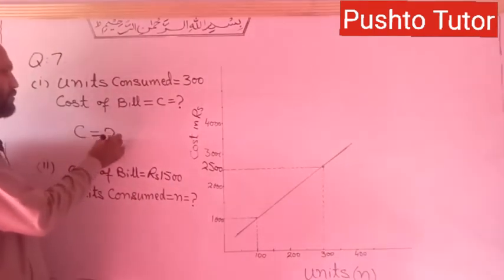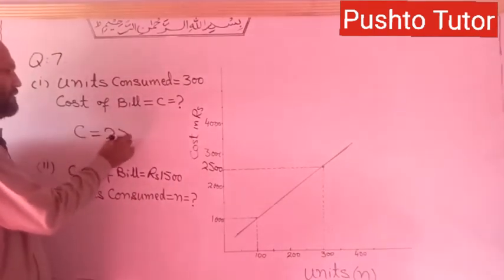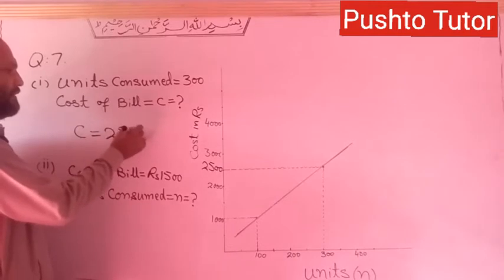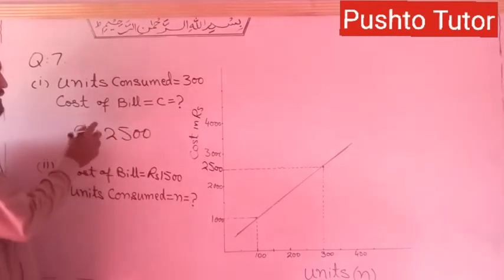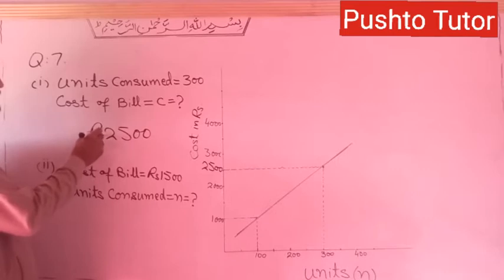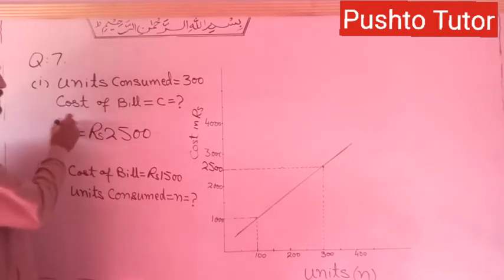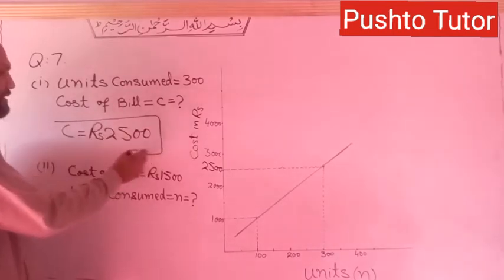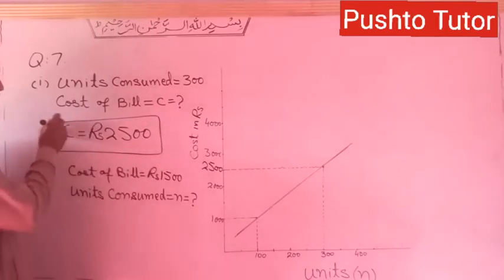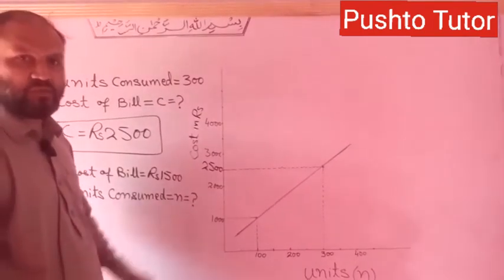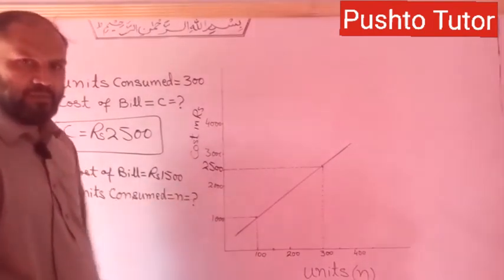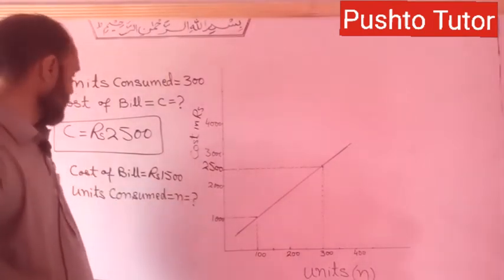The cost of electricity C is equal to 2,500 RS. The price in RS is equal to the answer. This is the graph of the information.